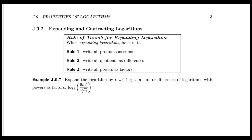The next part is expanding and contracting logarithms. We are going to use the last three properties. Remember the first property was product rule, the second property was quotient rule, and the third property was power rule.